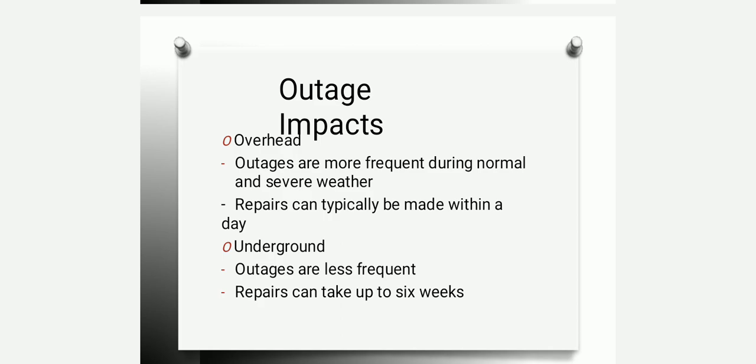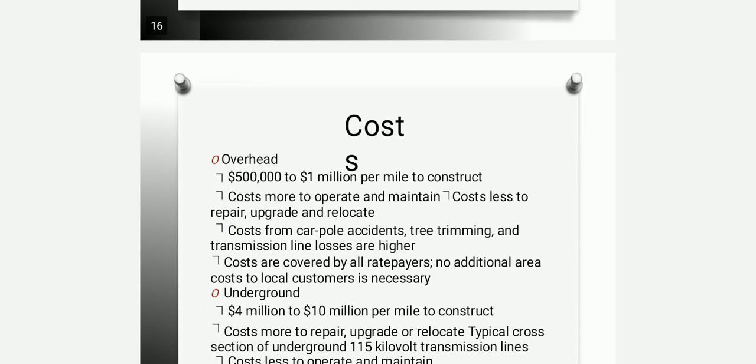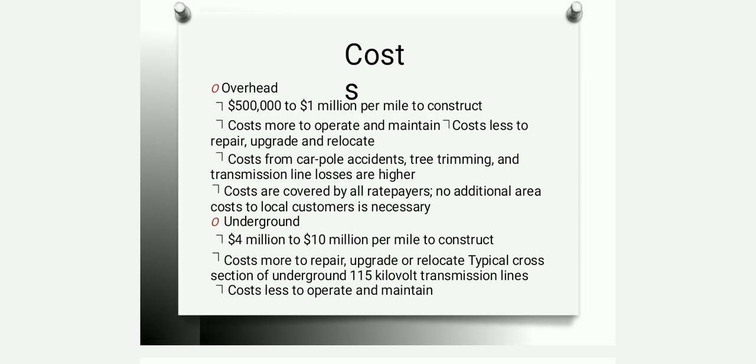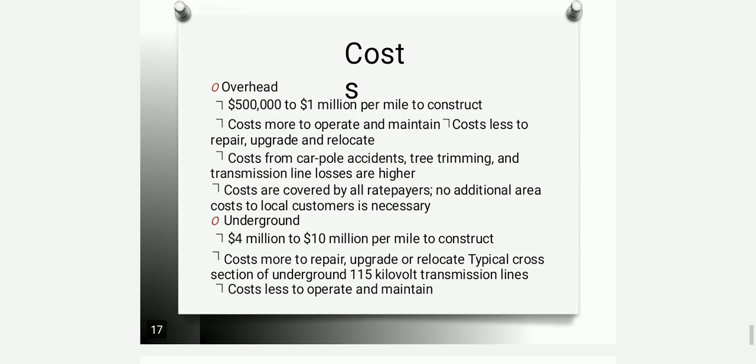For outage impacts, overhead outages are more frequent during normal and severe weather conditions but repairs can typically be made within a day. For underground, outages are less frequent but repairs can take up to six weeks minimum. The cost to construct an overhead line is $500,000 to $1 million per mile. This gives the representation of cost for laying down both an overhead transmission line and an underground transmission line.